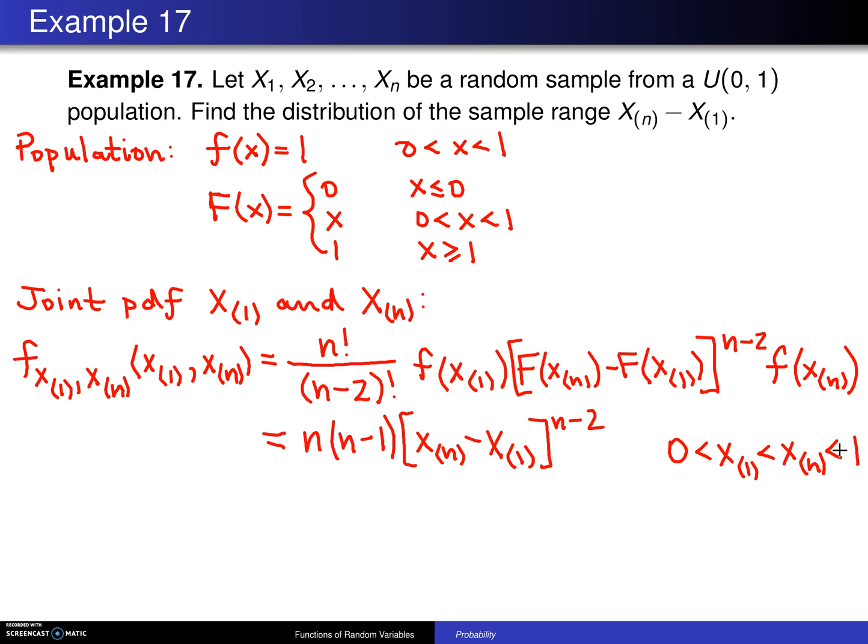So now on the next page, what we'd like to do is consider a bivariate transformation. The purpose of this bivariate transformation is to get to the sample range. So the first thing we want to do on this bivariate transformation is let y1 be g of x_(1), x_(n). In this case, we're going to take x_(n) minus x_(1). So in this particular case, this is what I would call the transformation that is of interest, and that thing right there is the sample range.